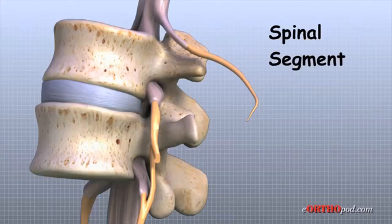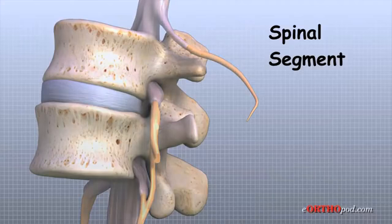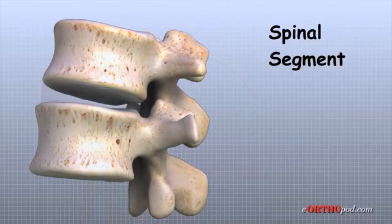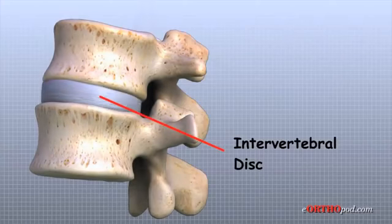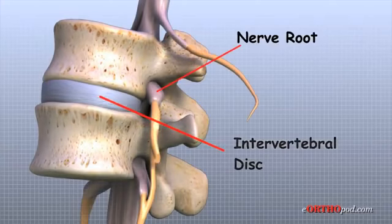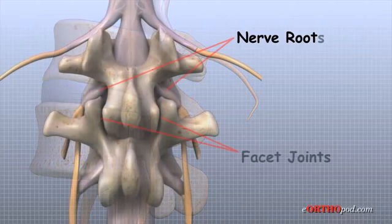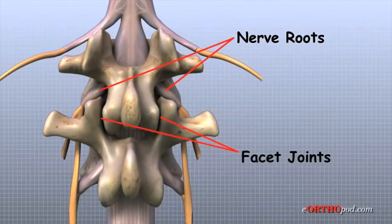It is sometimes easier to understand what happens in the spine by looking at a single spinal segment. The spinal segment includes two vertebrae, the intervertebral disc between, the two nerve roots that leave the spinal cord at that level, and the small facet joints that link each level of the spinal column.